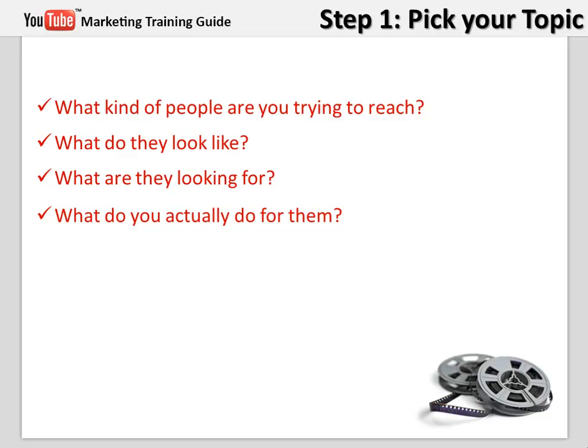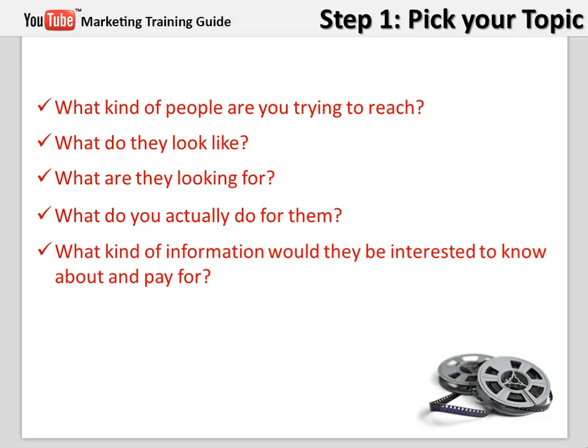What do you actually do for them? Maybe you are already offering a service for a specific audience. That will give you a great vision of how exactly you can inform new people that fit into the same audience. What kind of information would they be interested to know about and pay for? You already know the needs of your customers, so you know exactly what kind of information will be helpful to them in order to satisfy those needs. Why not create an info product about it?